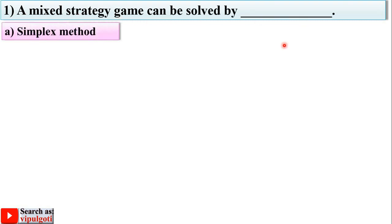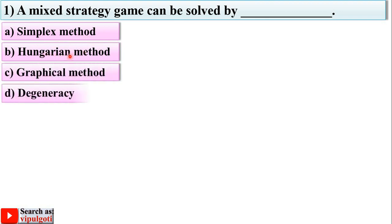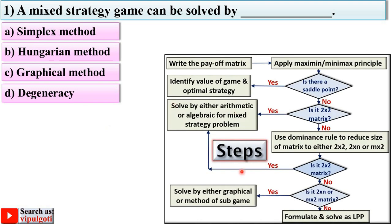The first question: a mixed strategy game can be solved by which method? Options are simplex method, Hungarian method, graphical method, or degeneracy. Considering the steps of game theory: if a saddle point exists, it is a pure strategy game, but if no saddle point exists, it is a mixed strategy problem. From this chart, if there is no saddle point, we move to the graphical method or the method of sub-games.